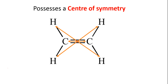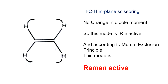Since ethylene is centrosymmetric, it obeys the mutual exclusion principle. The figure shows the HCH in-plane scissoring vibration. There is no net change in dipole moment, so this mode is IR inactive. According to the mutual exclusion principle, this mode is therefore Raman active.